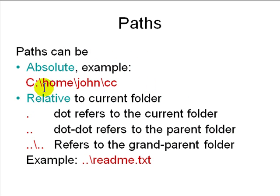Paths can be absolute — starting with C:\, for example C:\home\john\cc — or relative to the current folder. Dot refers to the current folder, double-dot refers to the parent folder, and dot-dot\dot-dot refers to the grandparent. For example, '..\readme' is the readme file in the parent folder.